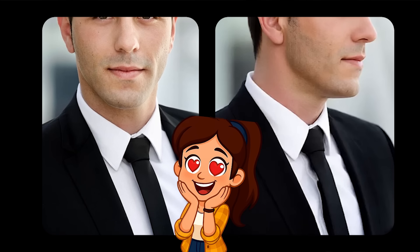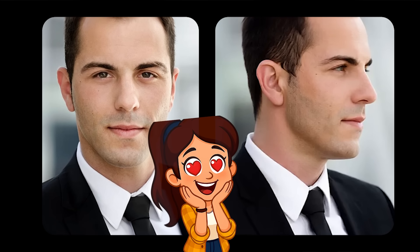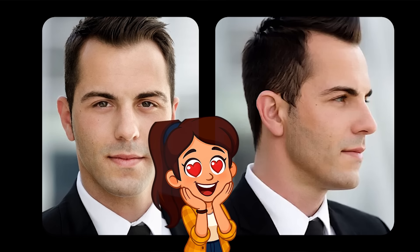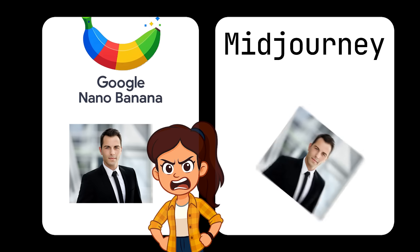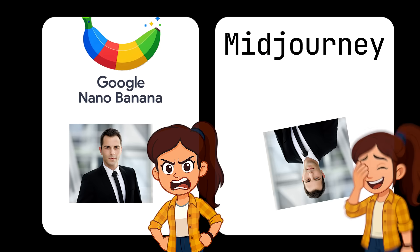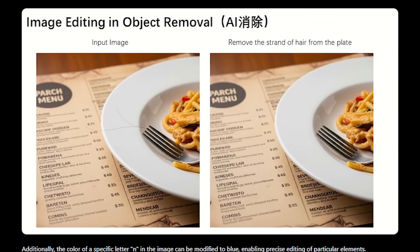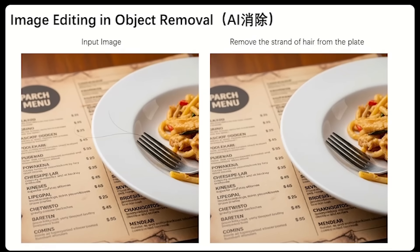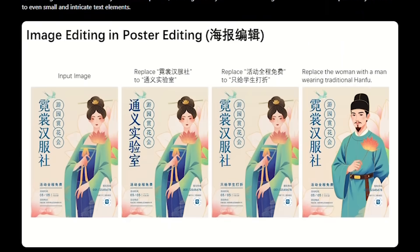All the details — lighting, depth, facial structure, even textures — stay accurate and natural. This is exactly what Midjourney and Google Nano Banana couldn't do. They usually rotated the subject, not the camera, which is why the results were random, incomplete, or unrealistic. But Quen, because it's trained specifically on perspective reconstruction, can generate the parts of the subject that weren't visible in the original image in a natural way.